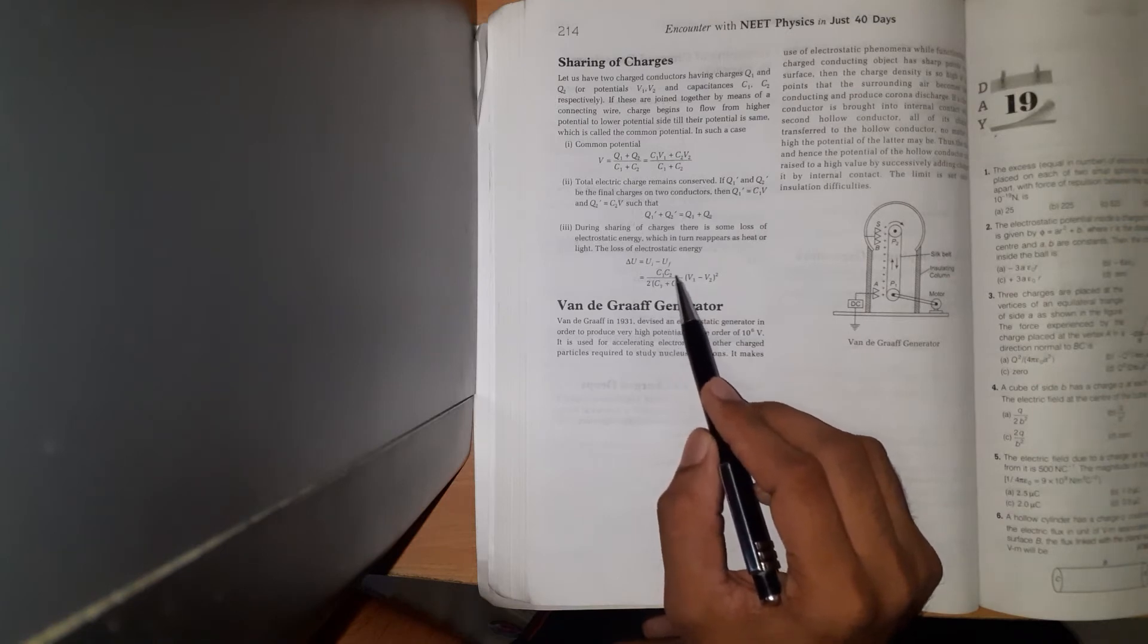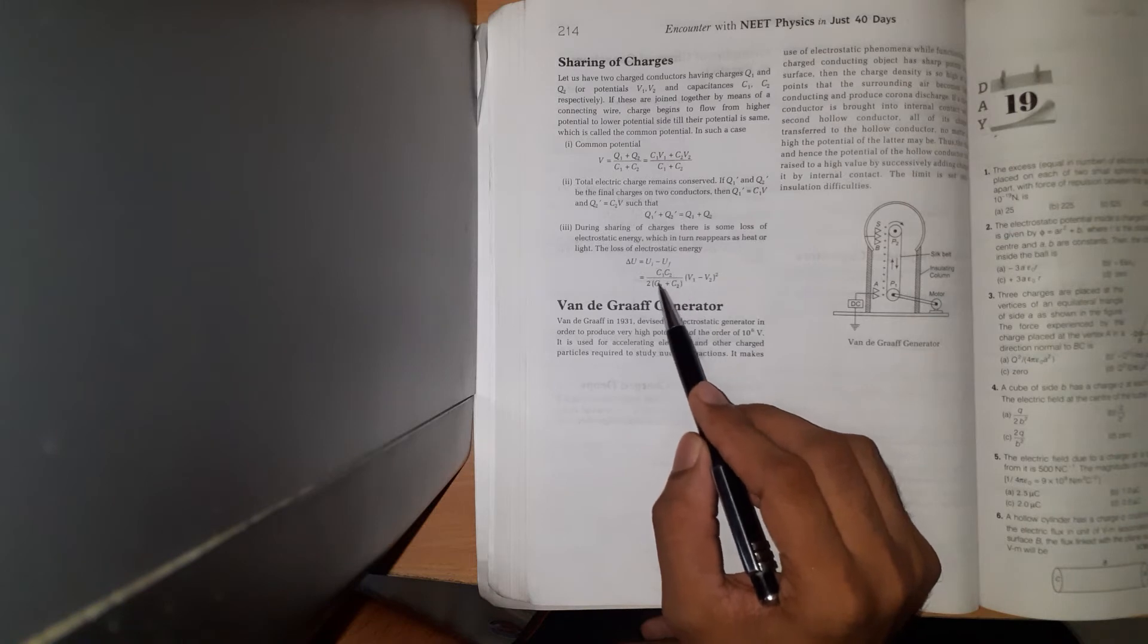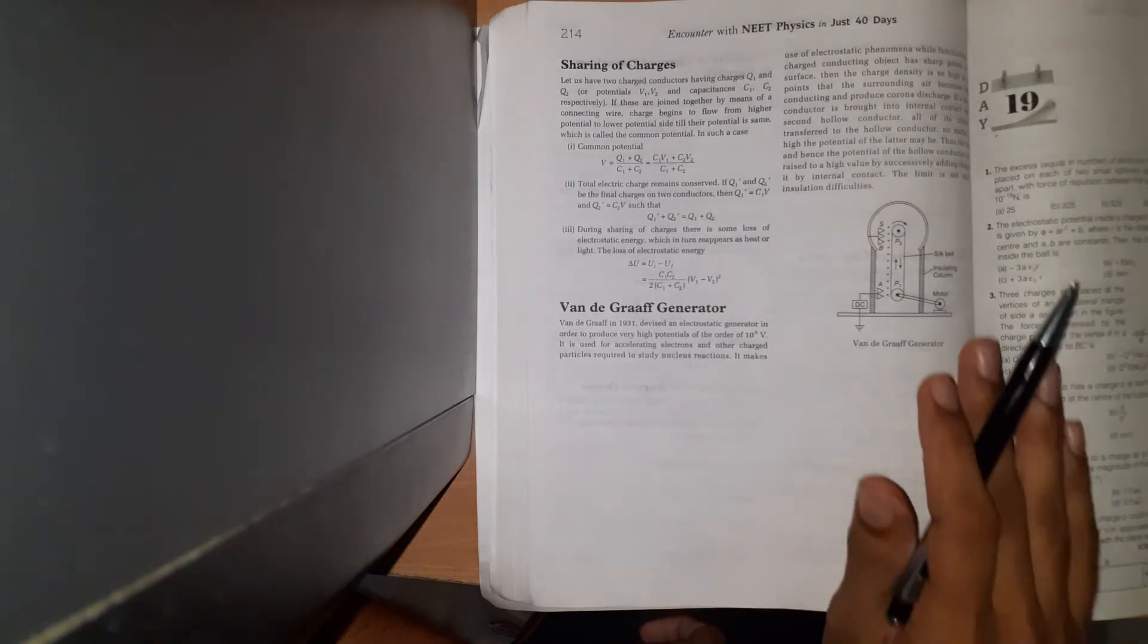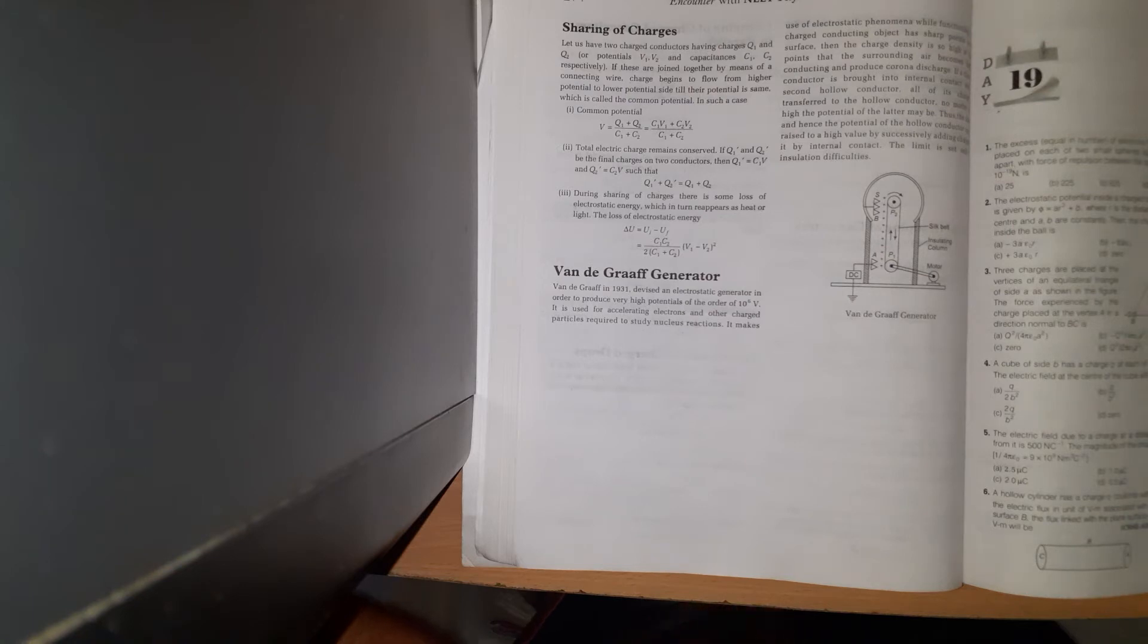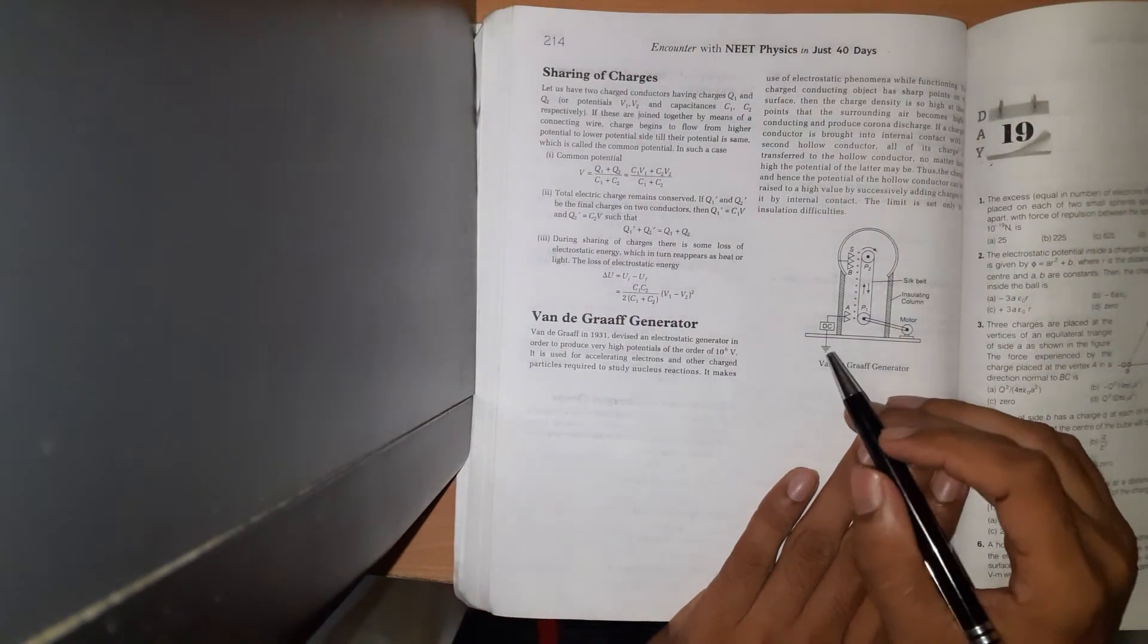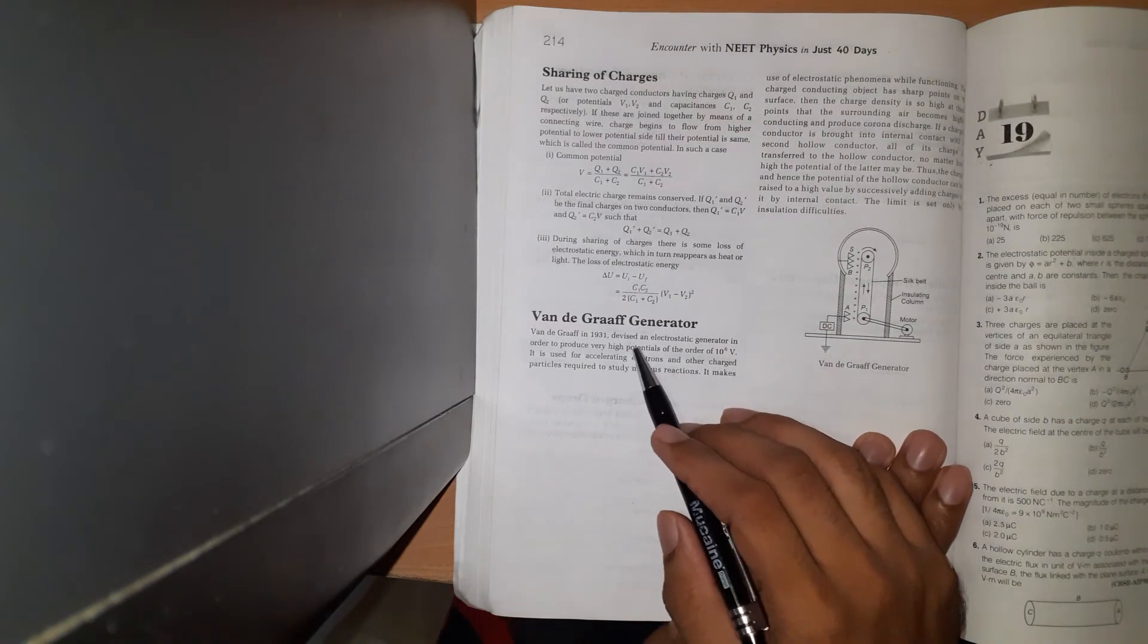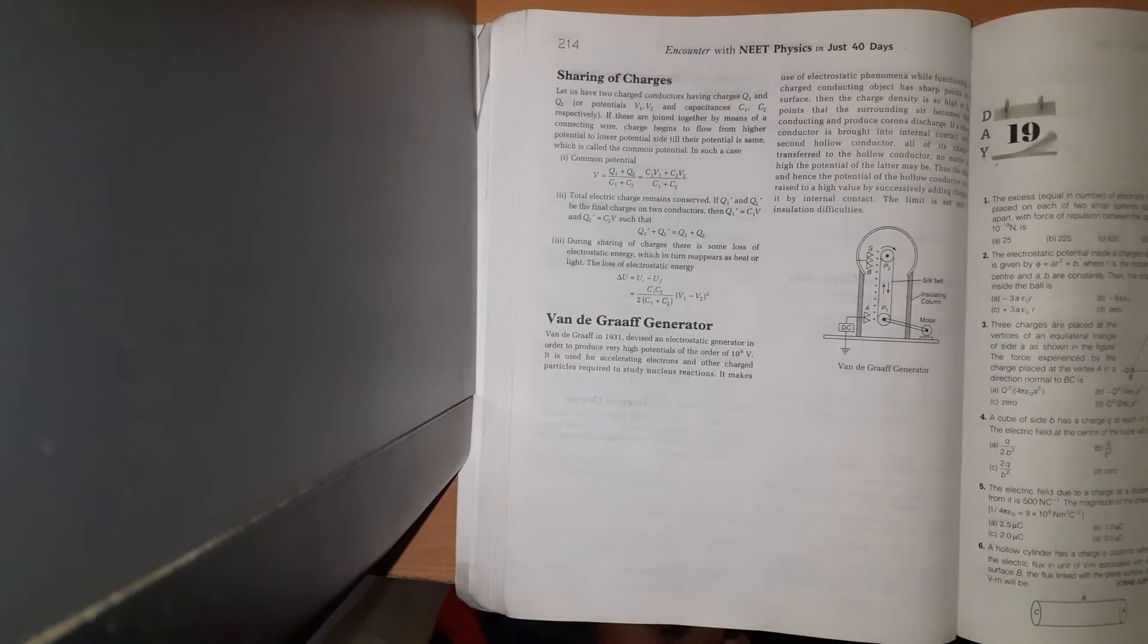The Van de Graaff generator is a device used to produce high potential. The Van de Graaff is a 1931 electrostatic generator designed to produce high potential values for accelerating particles.